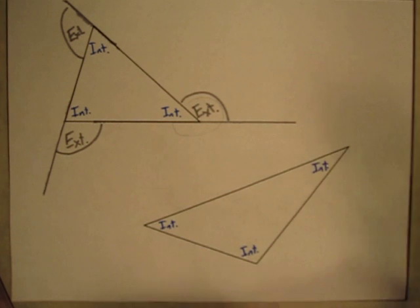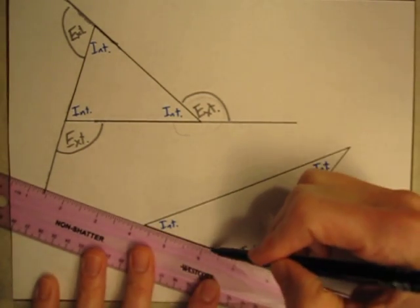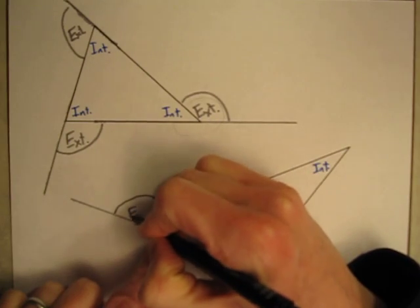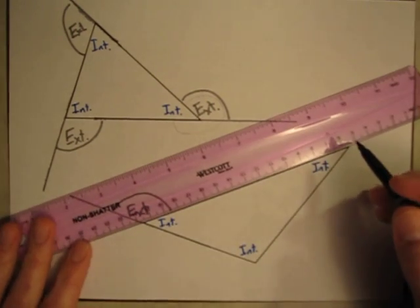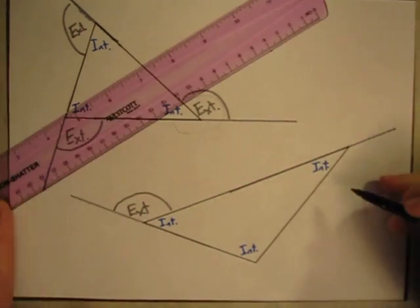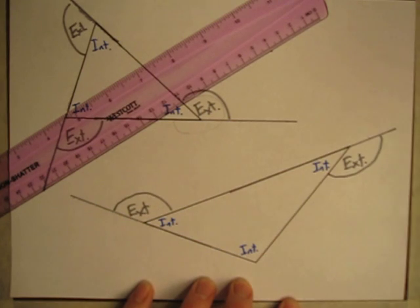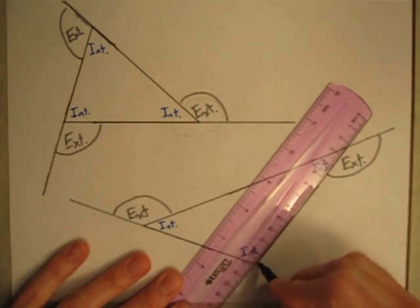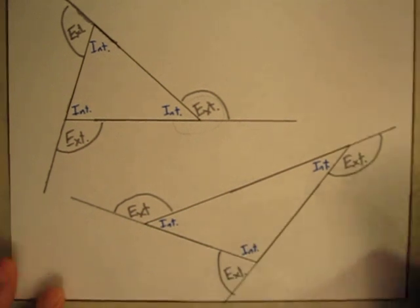Those are the three interior angles, and I can create exterior angles the same way I did before. If I take a side and extend it, this interior angle is adjacent to this exterior angle. I can extend this side this way and have another interior angle adjacent to an exterior angle. And one more time — I'll extend this third side, and this interior angle is adjacent to this exterior angle.